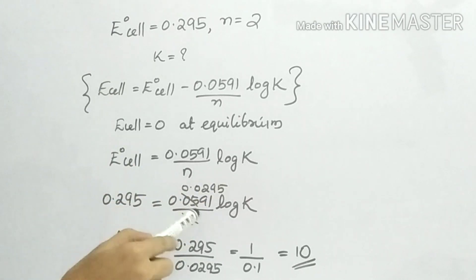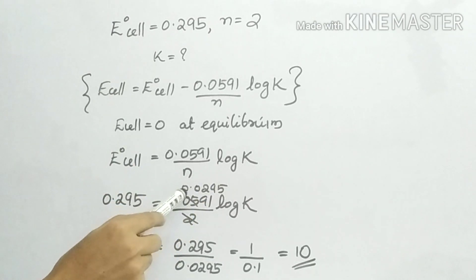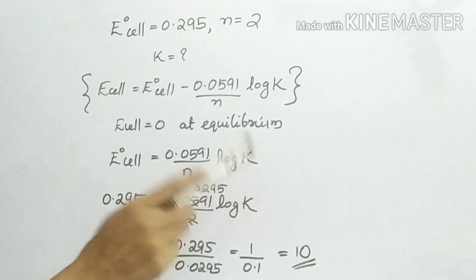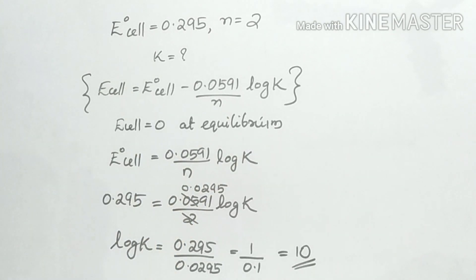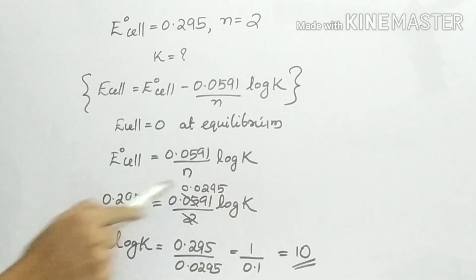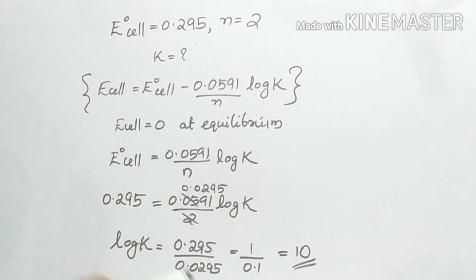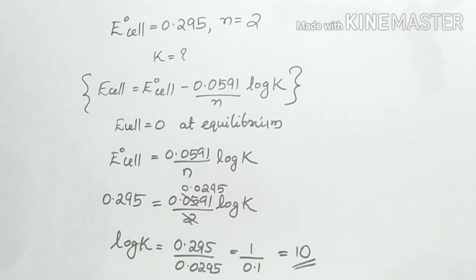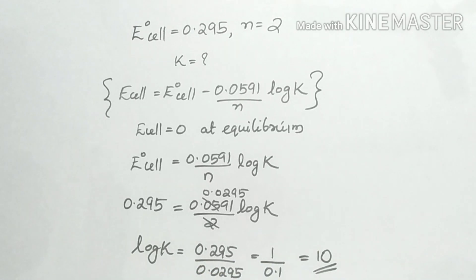We put in 0.295. What is log K? This is 1 divided by 0.1, which equals 10. Then we call it 1 by 0.1, that is equal to 10.